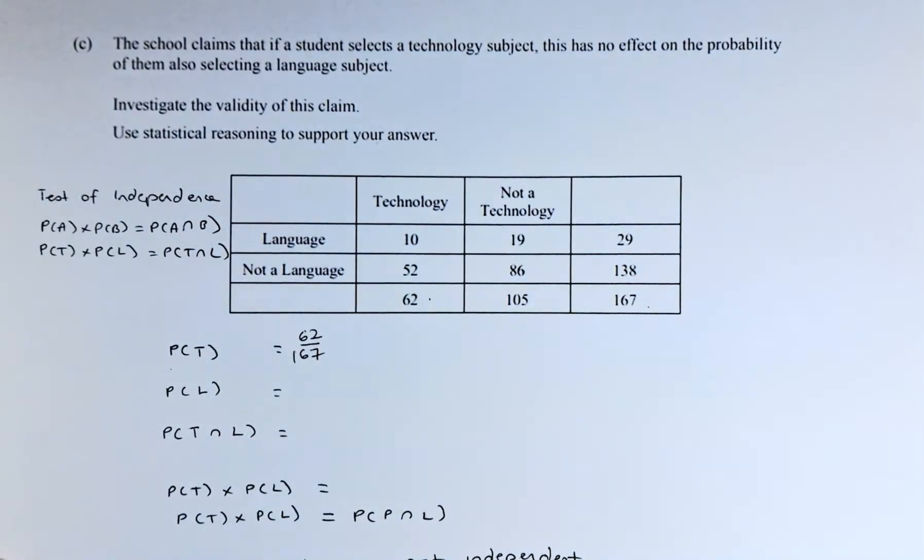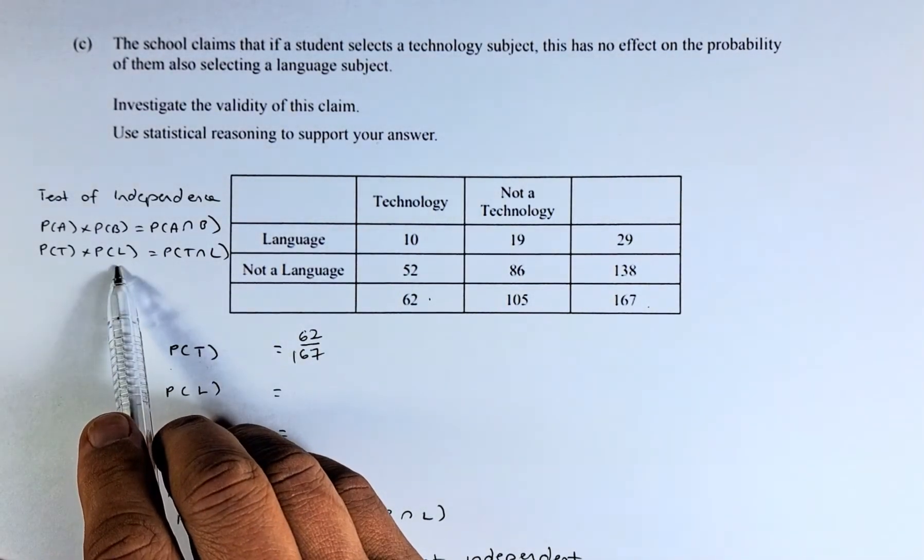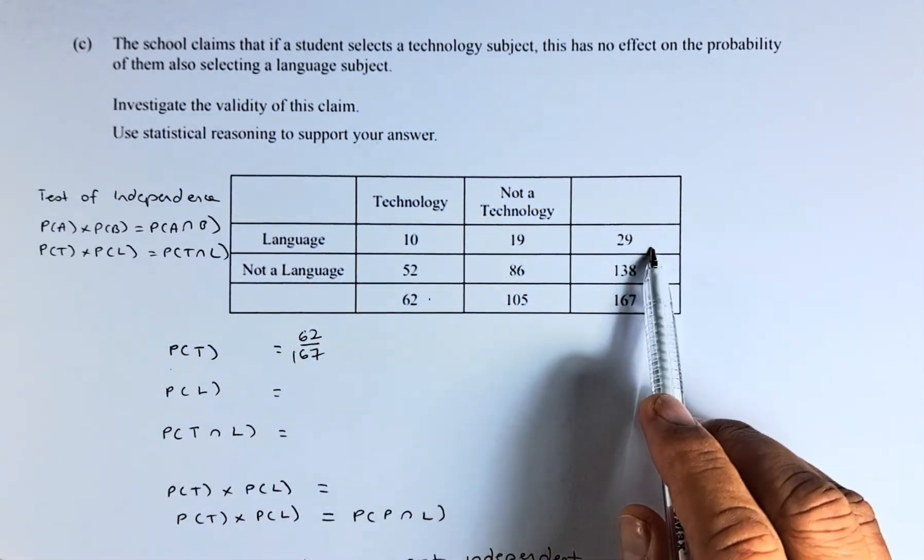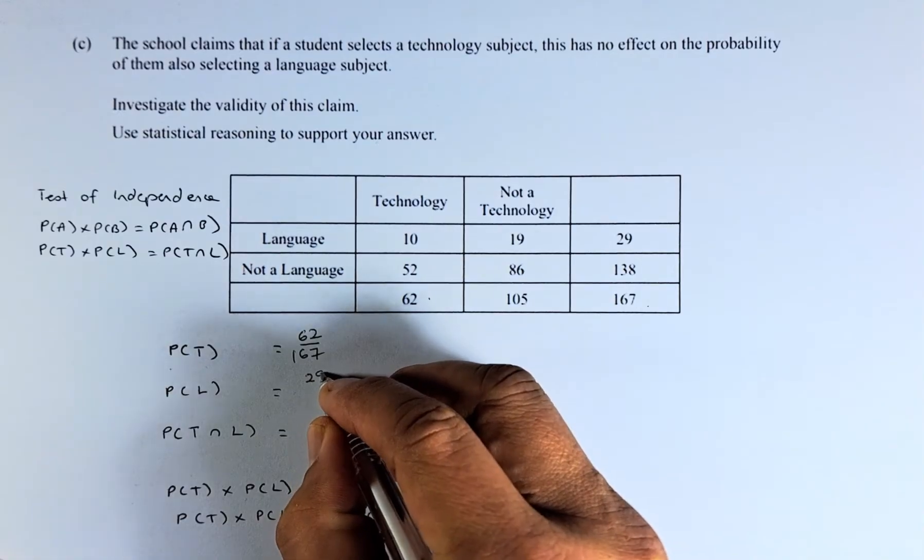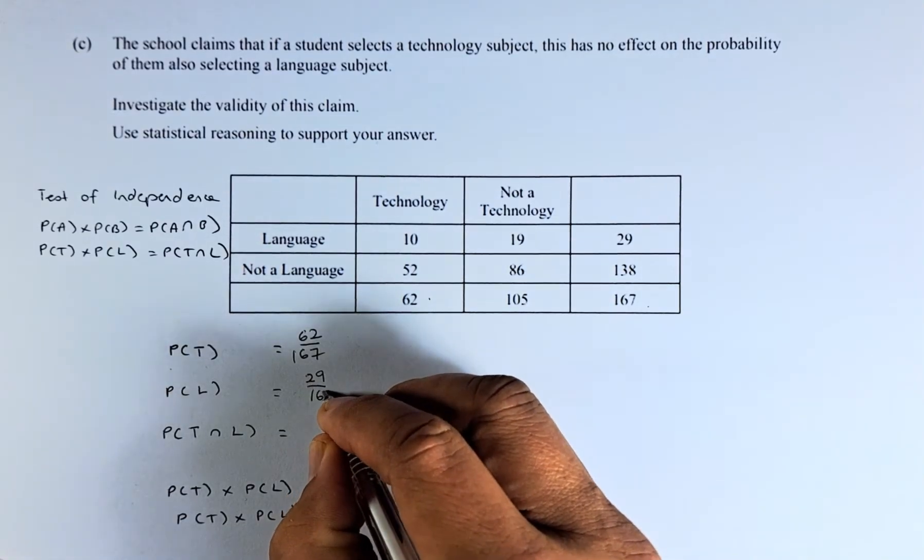Now, we have to do the second part. What is the probability of a language? Language is here. It is going to be 29 out of 167. The probability of a language is 29 over 167.